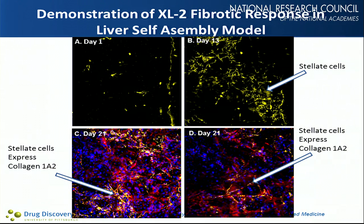We wanted to show activity based on the stellate cells and Kupffer cells. When we challenge these cells with things that induce fibrosis in vitro — like a bolus of methotrexate — the stellate cells labeled yellow increase in number by day 13. By day 21, we can see expression of collagen from these stellate cells in linear arrays of collagen fibers. Not only do the stellate cells reproduce in response to challenge, but they also start forming fibers, which is relevant to fibrosis in liver diseases.